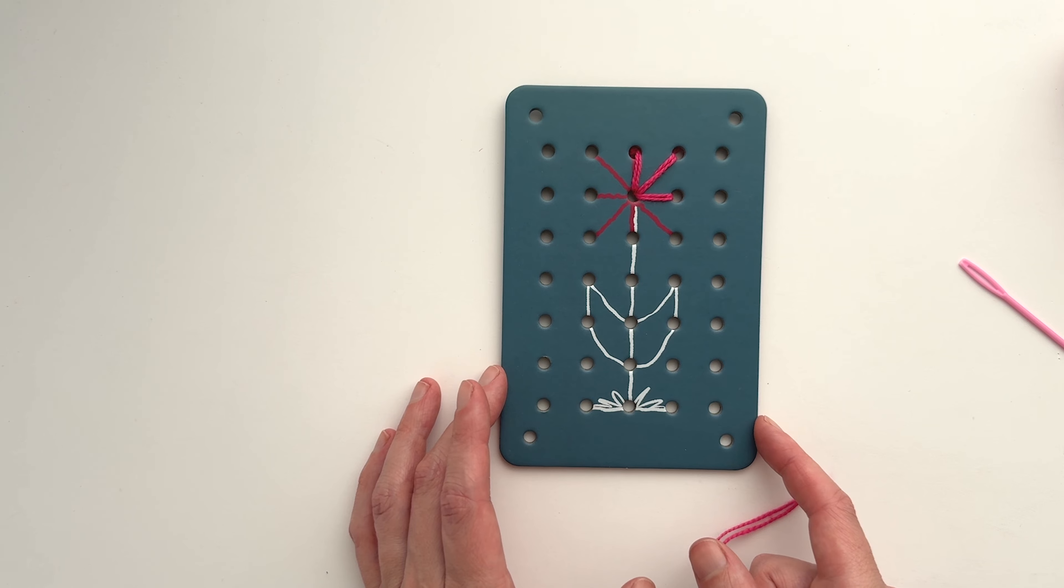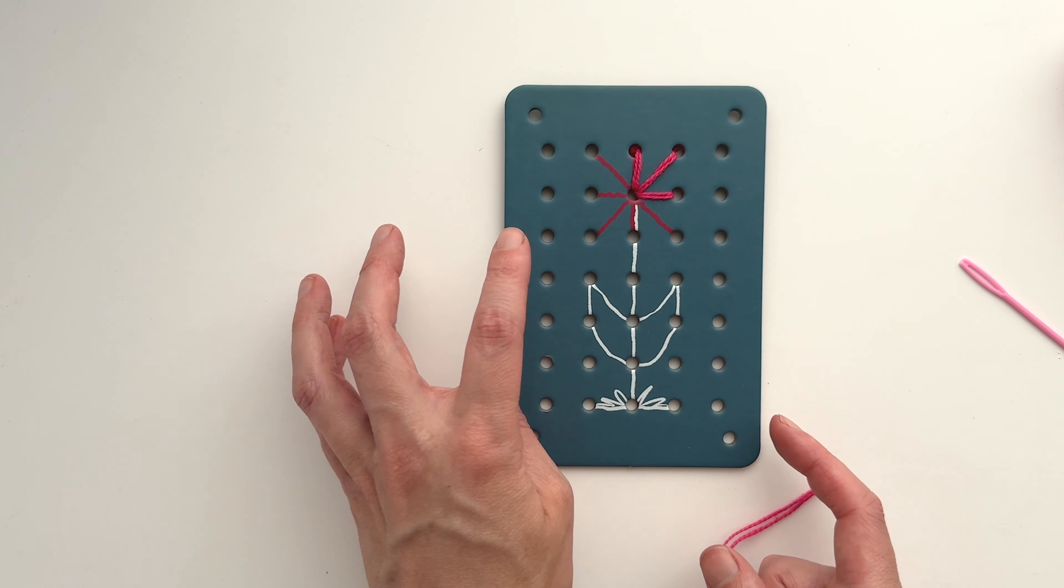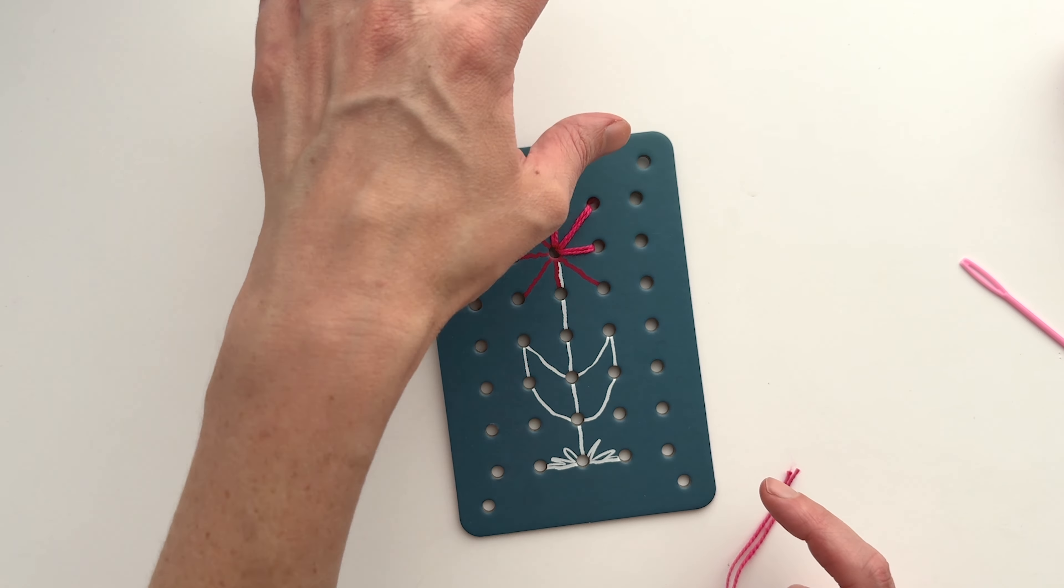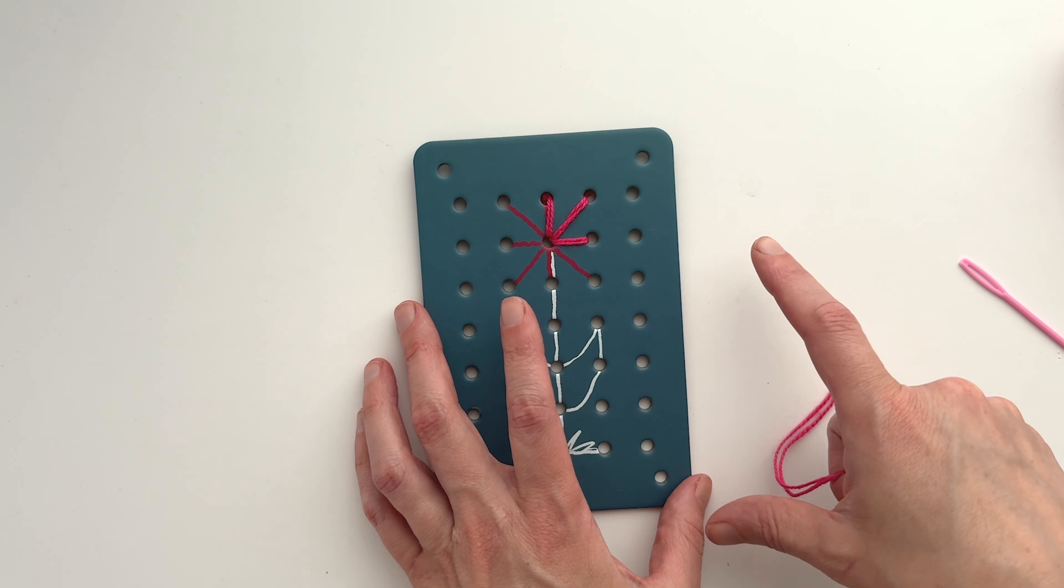If your child wants to save their work and hang it up, you can use the yarn and the holes on the corner of your stitching cards and either hang one card on top of another to create a wall hanging.